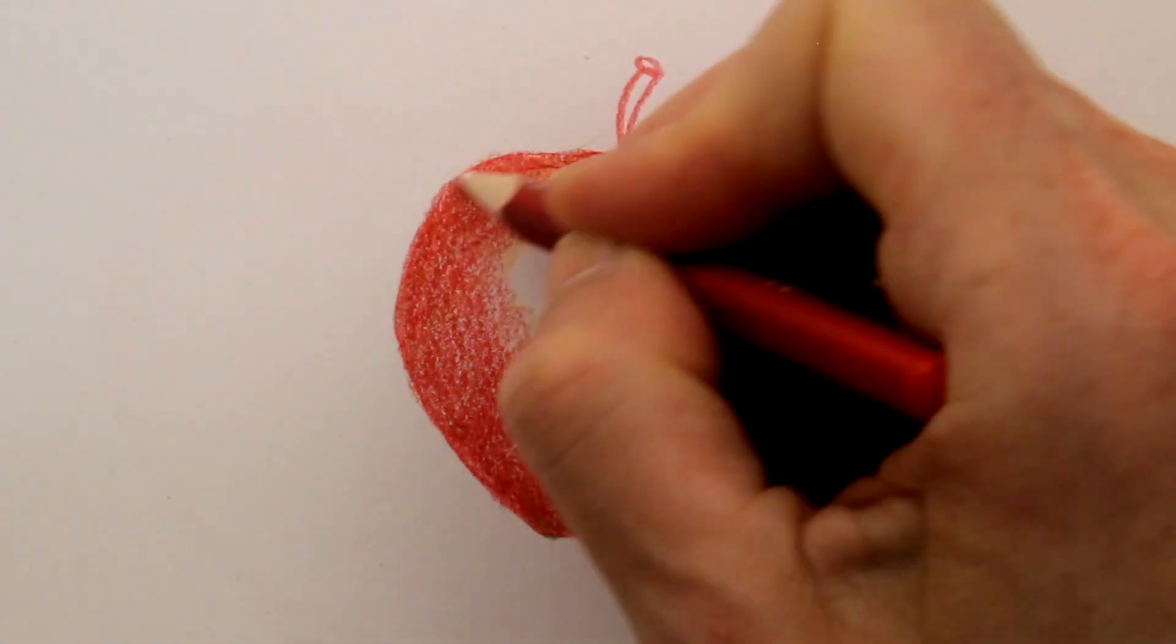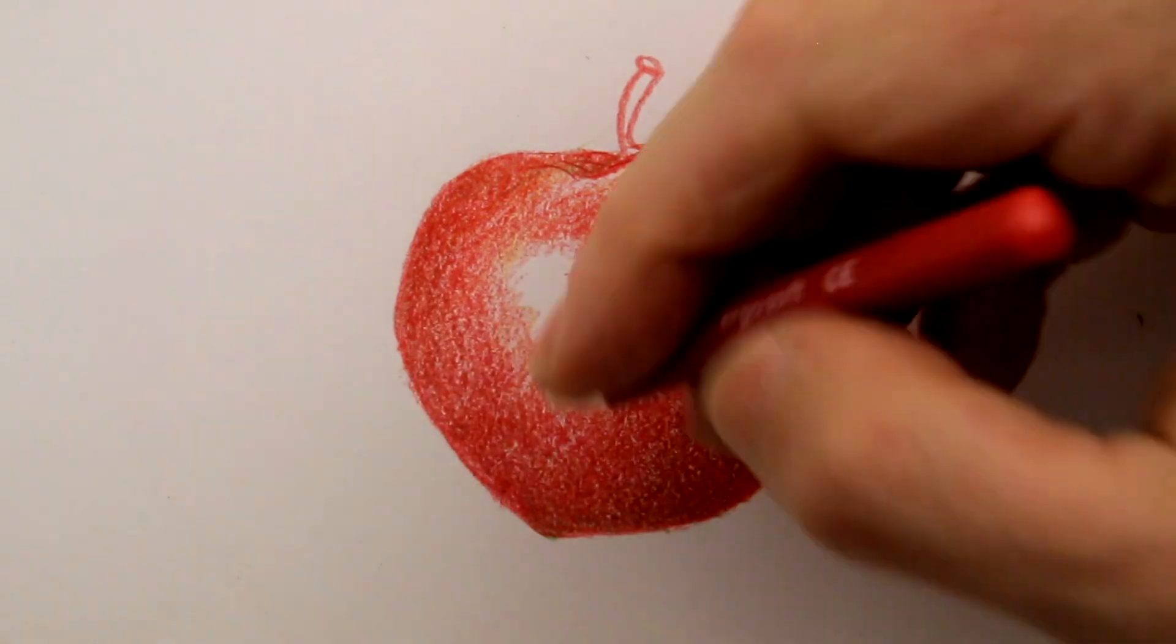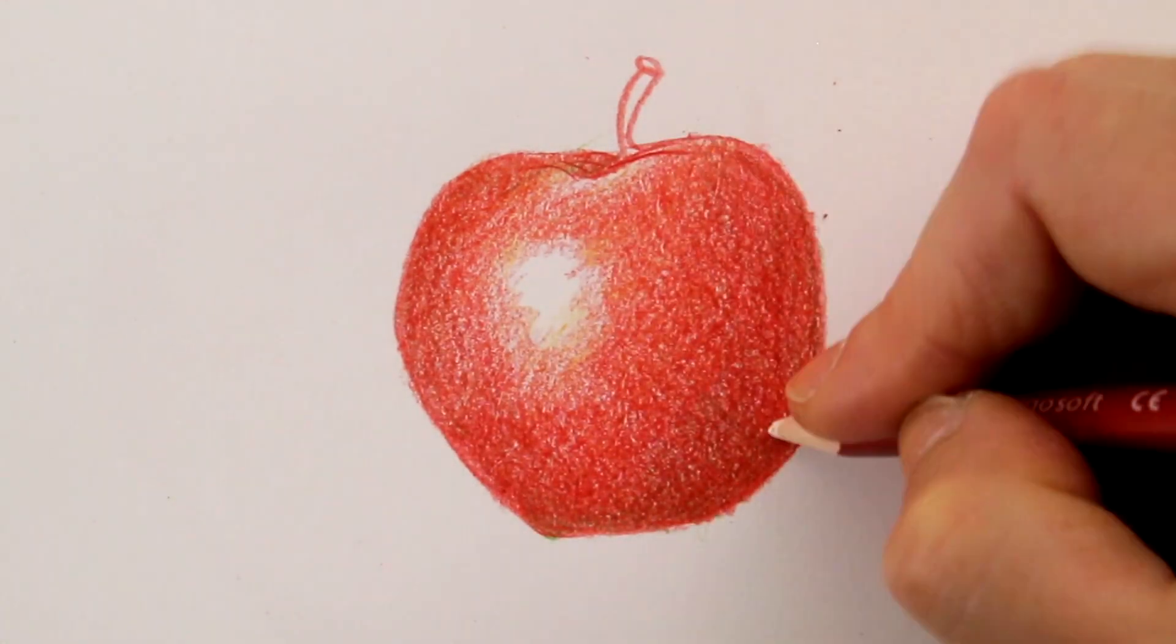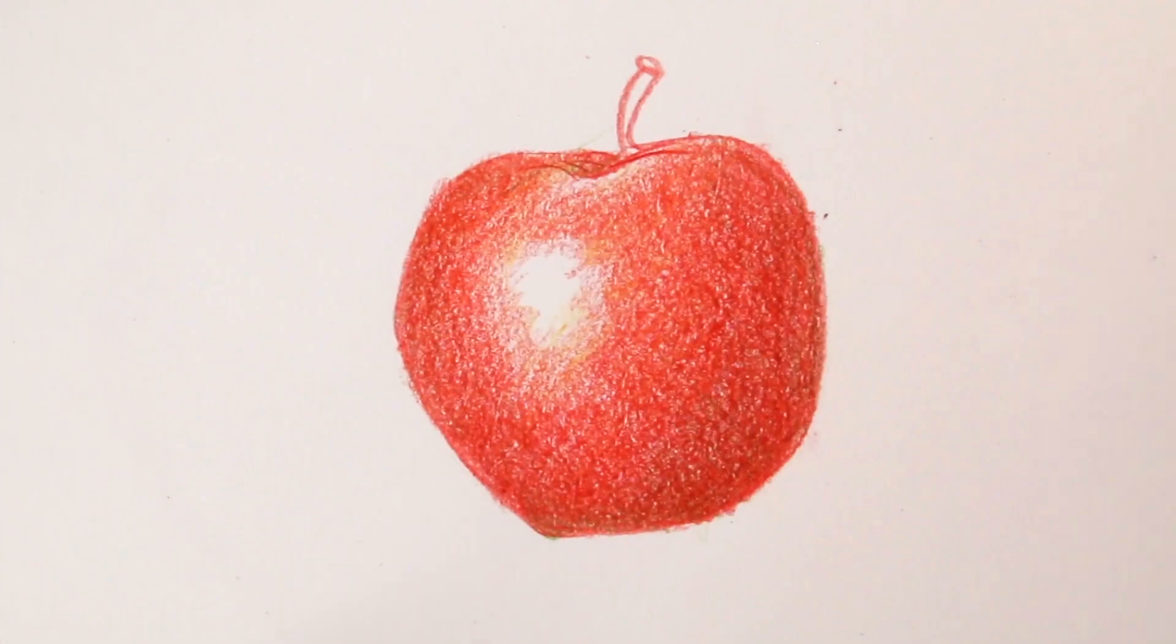Let's not forget the drop shadow. If you add this, your apple will sit on a surface, rather than float in a white paper space.